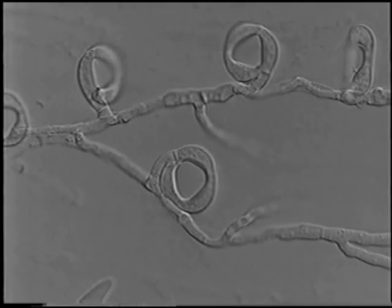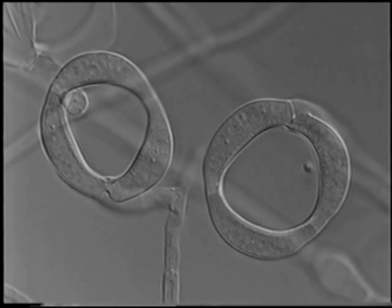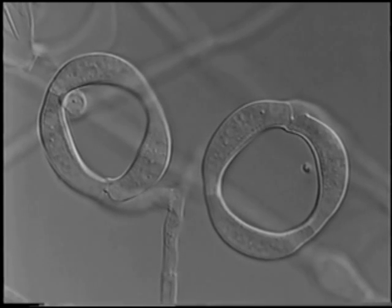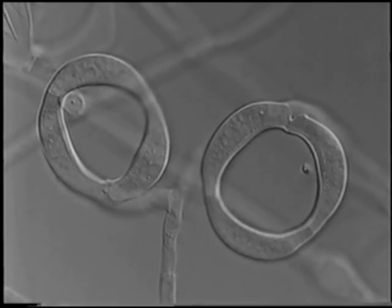The fourth example of a nematode trapping fungus uses constricting rings. The rings of Arthrobotrys dactyloides consist of three cells attached to the mycelium by a stalk.